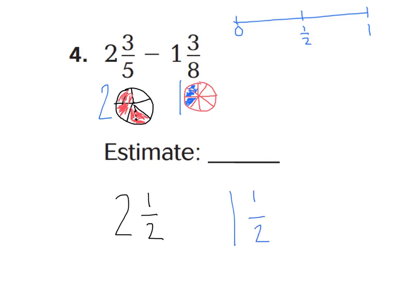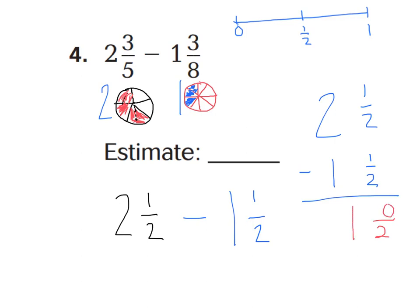So now my question can be changed to two and a half minus one and a half, and now I can subtract. Remember, when you subtract with fractions, you always keep your denominator the same and subtract your numerator. One minus one is zero, and two-whole minus one-whole is one-whole. Because this is zero-halves for my fraction, I can just call this zero. So our final answer is going to be one-whole.